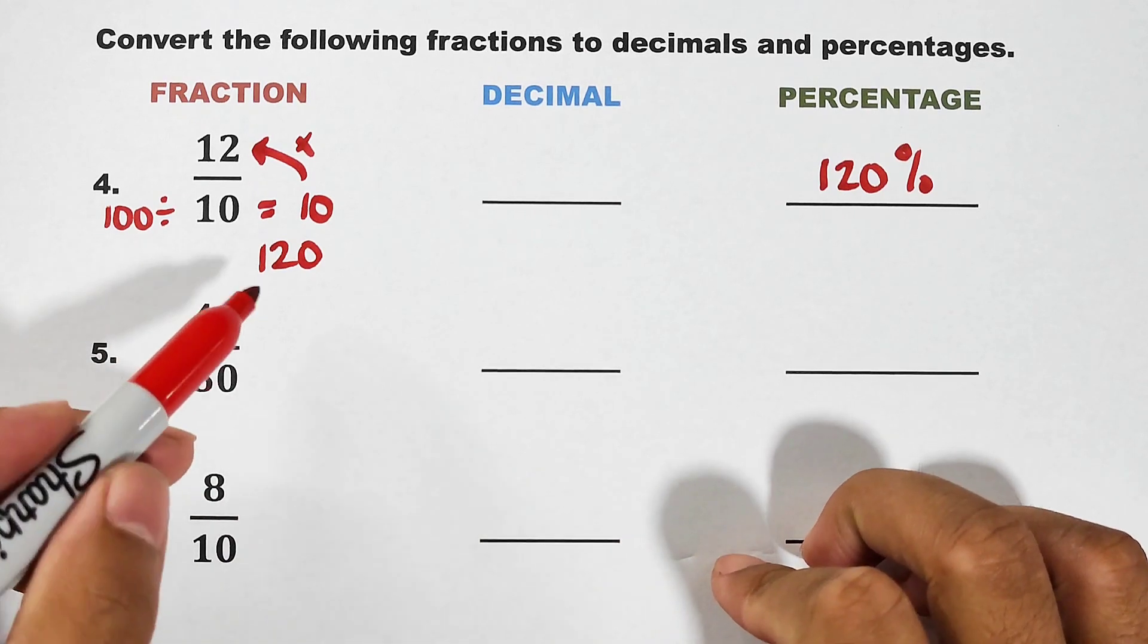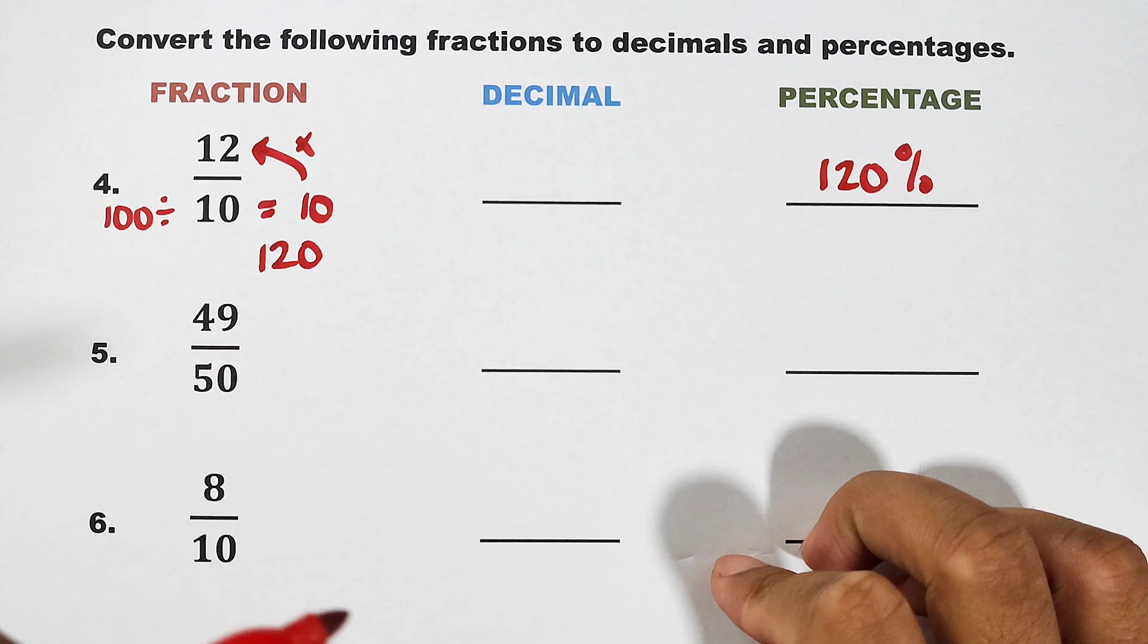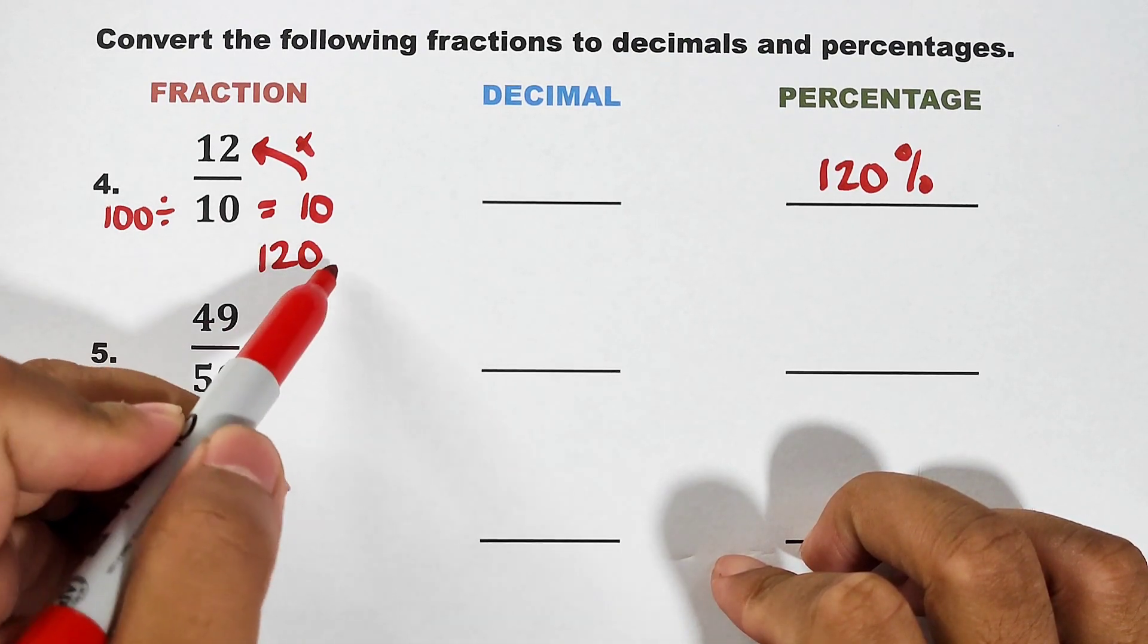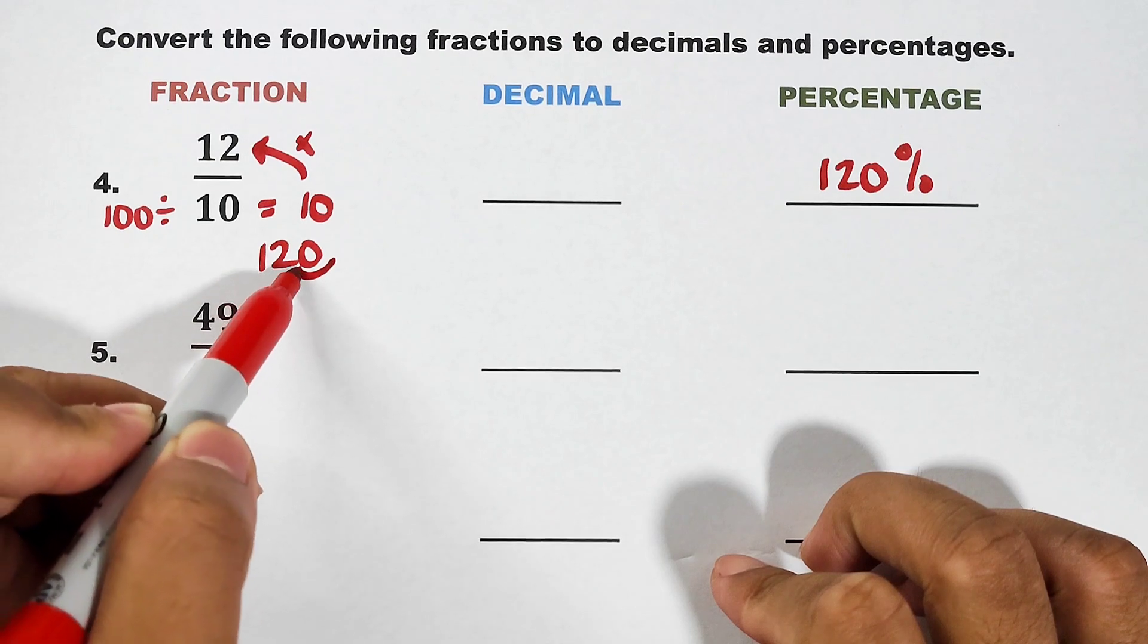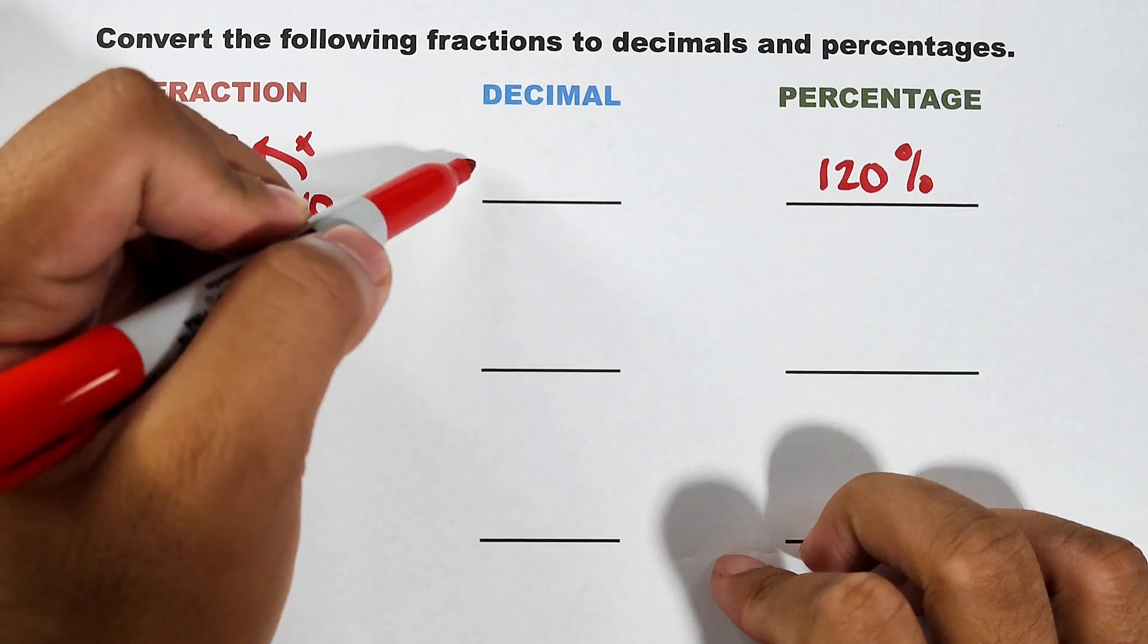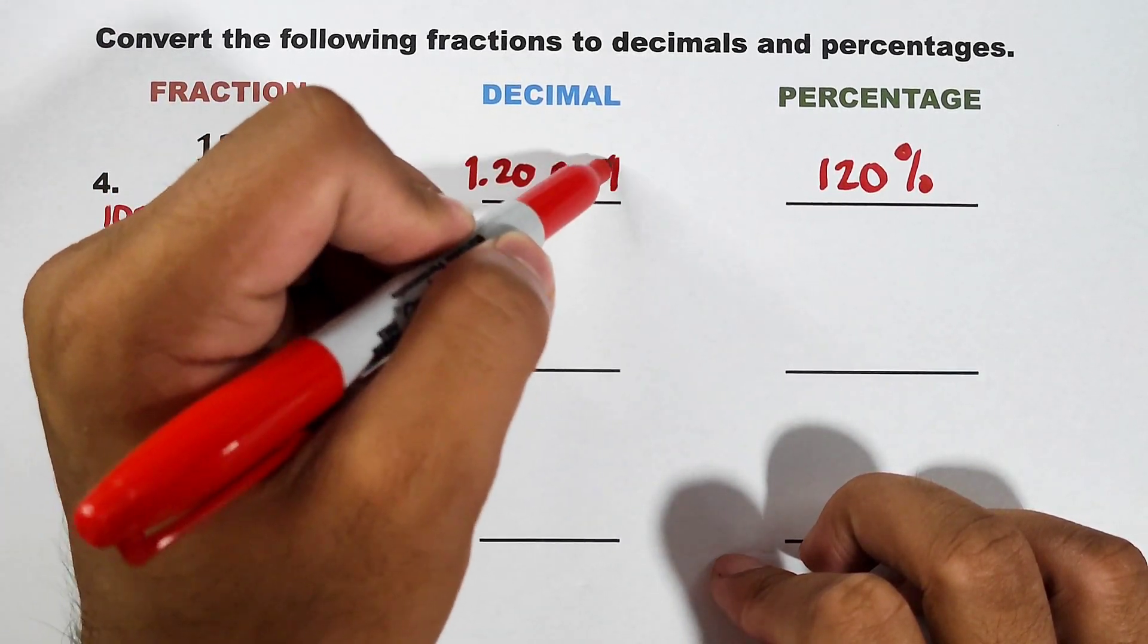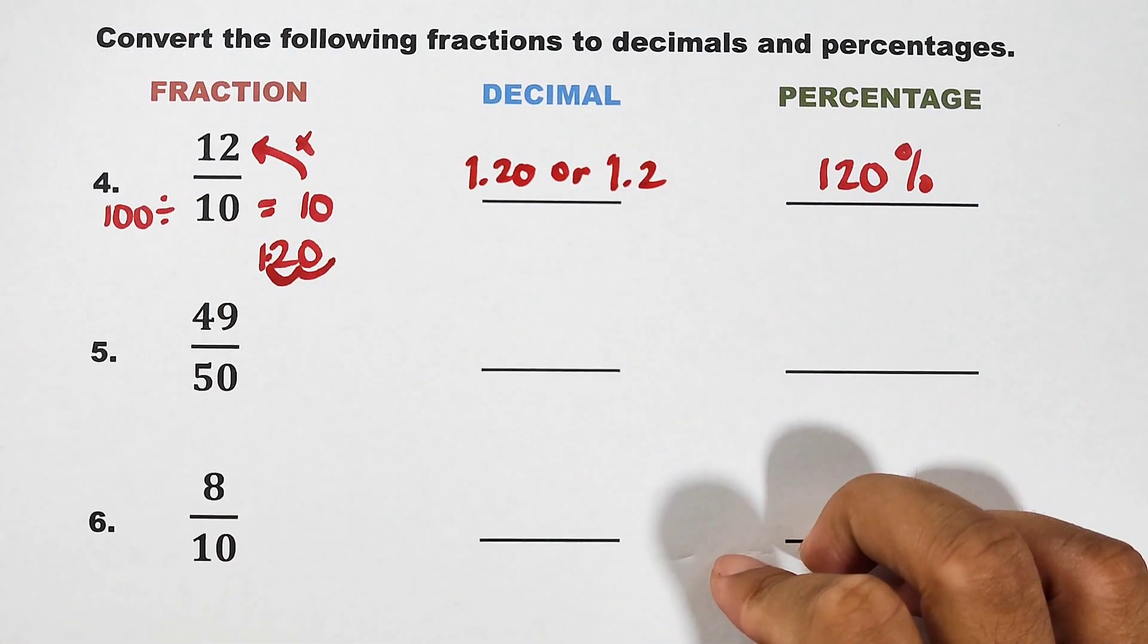Now, what about the decimal? For the decimal, since we have here 120, we just need to move it two decimal places going to the left. From this, 1 and 2, and it will stop here. For decimal, that is 1 point 20 or 1 point 2. Okay?